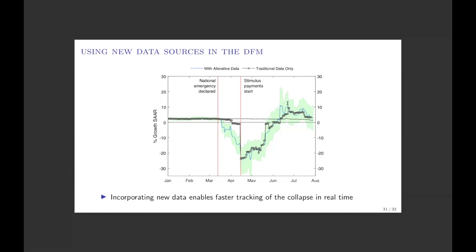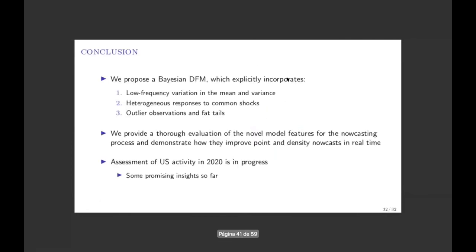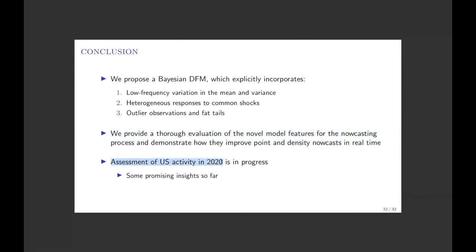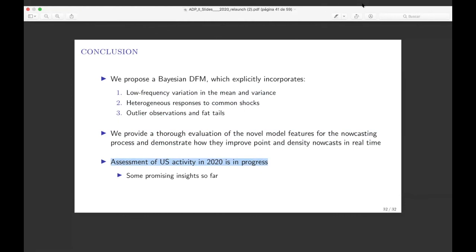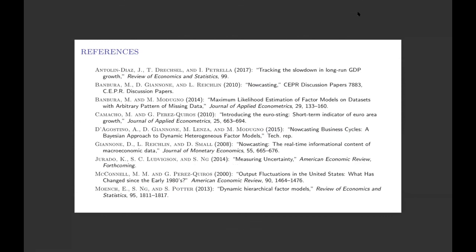To conclude: we incorporate low-frequency variation in the mean and variance, heterogeneous responses and lead-lag patterns, and fat tails and outlier observations into the nowcasting process. If you do this and evaluate the model, it performs better out of sample and in real time. These innovations appear to have been particularly useful in 2020 with the coronavirus pandemic. Thank you very much, I'm happy to take questions.